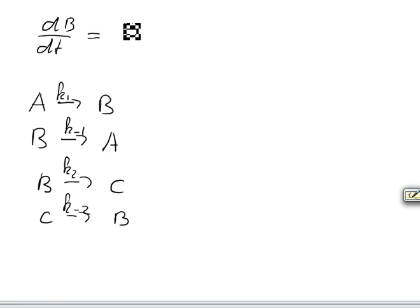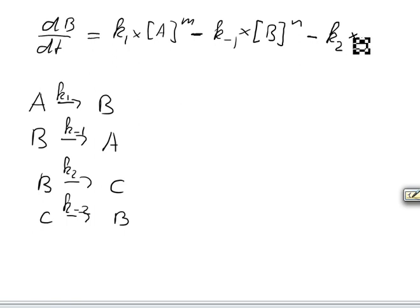dB equals - we produce B in the first one, so it is k1 times A to the power of M. We lose B here, so minus k minus 1 times B to the power of N. We lose B here, so minus k2 times B to the power of N. But we gain it here, so we get plus k minus 2 times C to the power of P.